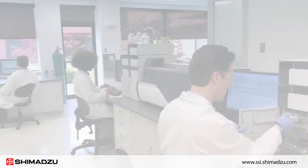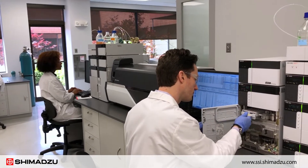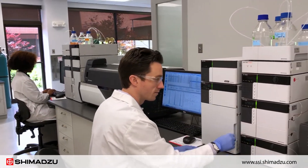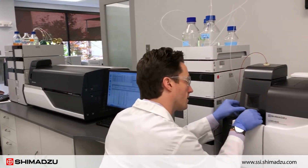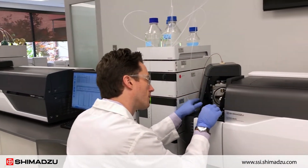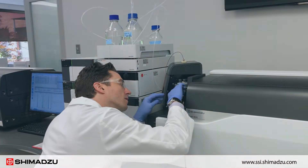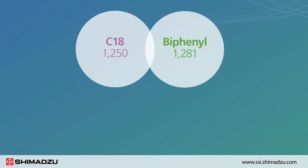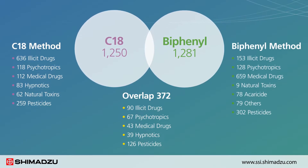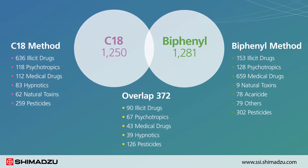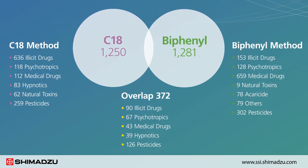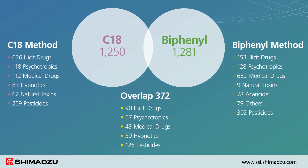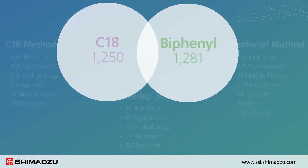Shimadzu's forensic toxicology database is equipped to meet your unique application needs. It is built for two separation conditions: C18 and biphenyl. The C18 method delivers information on 1,250 compounds, and the biphenyl method provides information for 1,281 compounds.